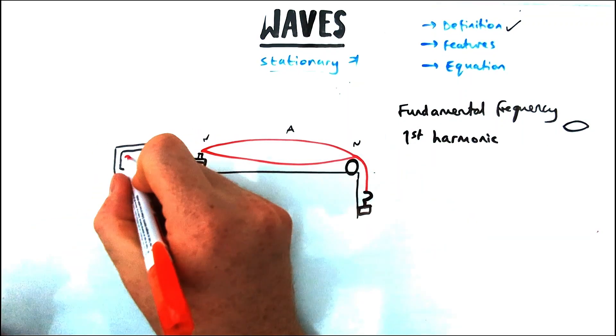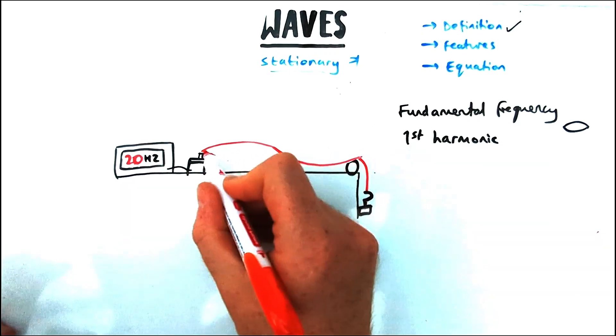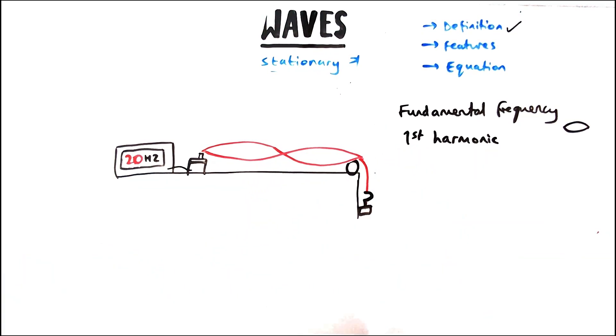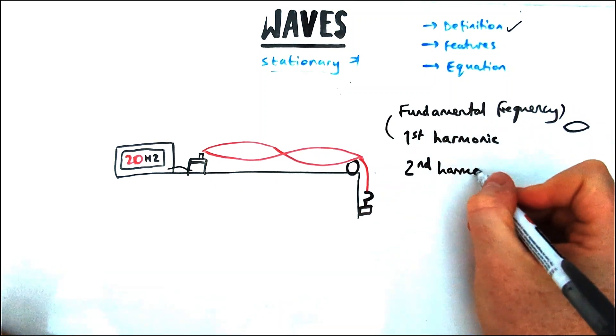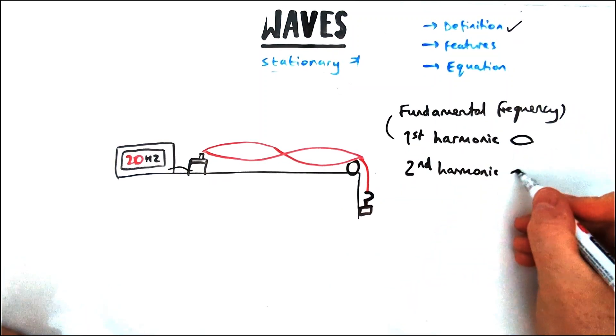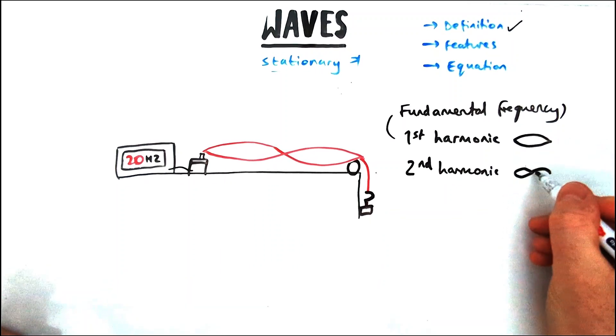This doesn't have a fancy name. This is just called the second harmonic when I've got two loops instead of one on the same length of string. If I was to increase the frequency even more, this time to 30 hertz, I'll keep the numbers simple here. If I triple the original value of frequency, I'm going to get the third harmonic which means three loops on my piece of string.